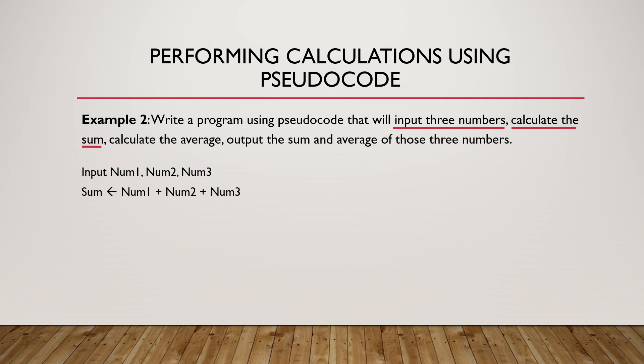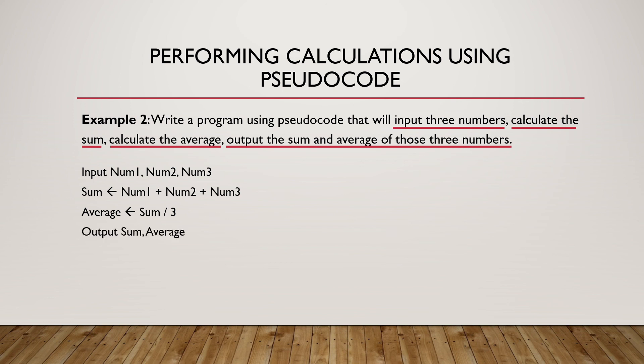To calculate the average, the average should be sum divided by three: average, arrow symbol, sum, using the slash symbol for division, divided by 3. Lastly, we output both the sum and average on a single line: output sum, average.